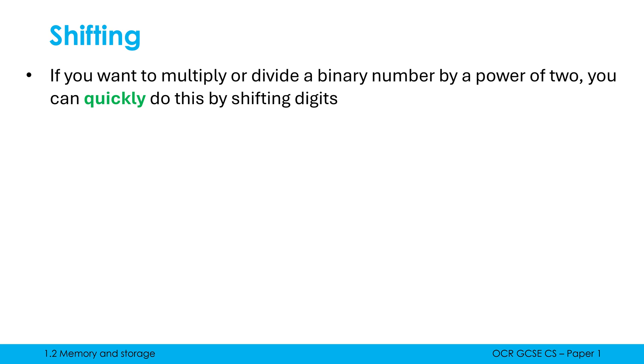There is such a thing as binary multiplication and binary division with formal methods, but comparatively it's quite slow. Shifting is a simple process that will quickly do this for you. For example, multiplying 28 by 4 is eligible because 4 is a power of 2 (2 to the power of 2 equals 4).